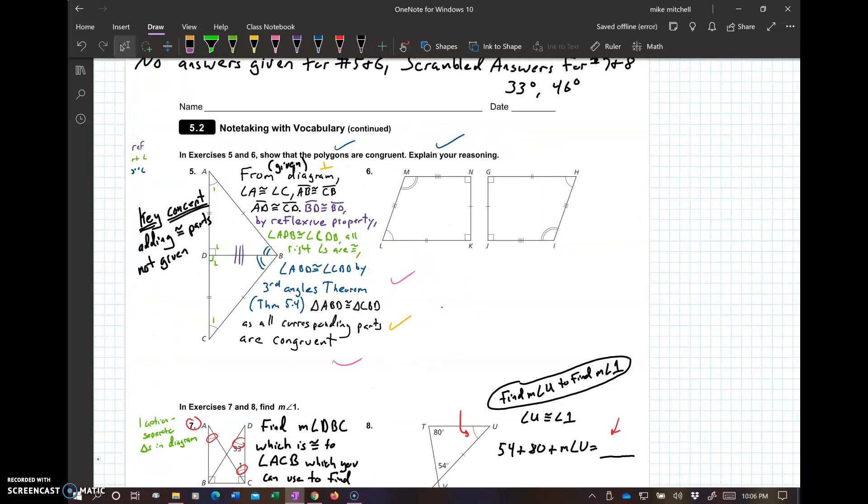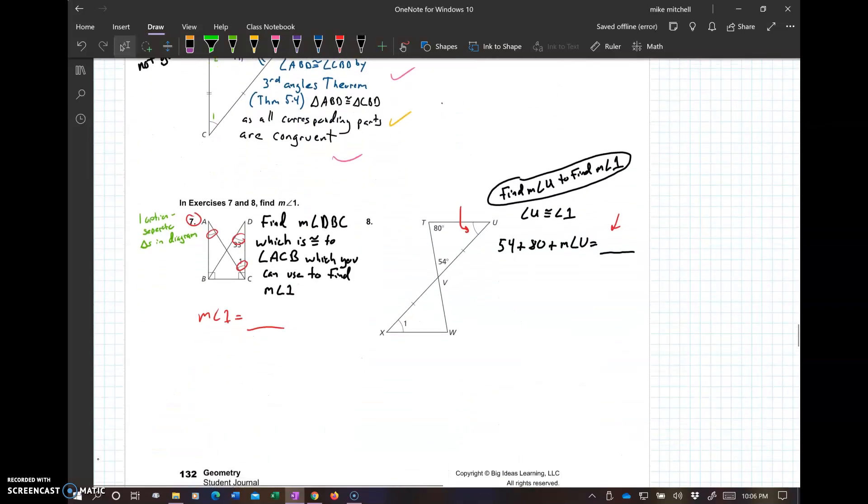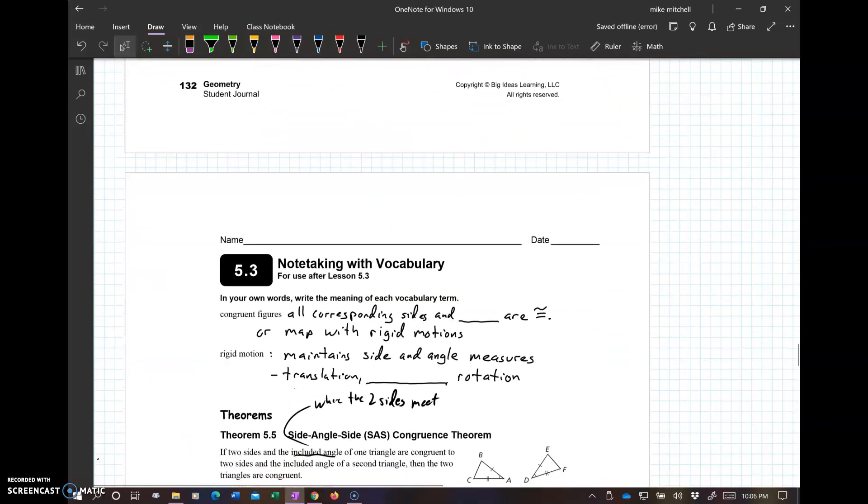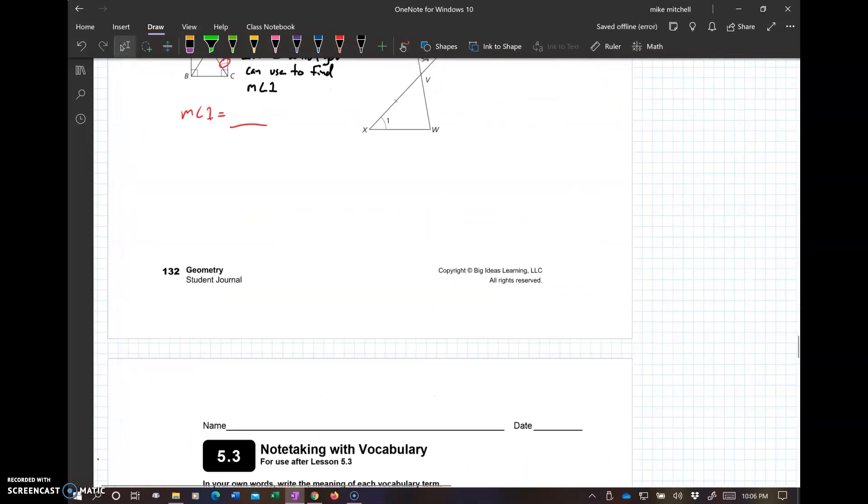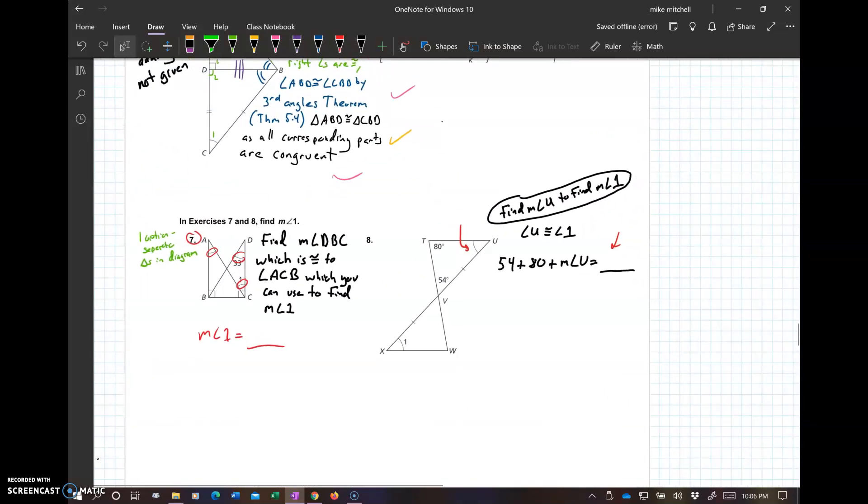We don't have any of the SSS, SAS, ASA, AAS at this point. The only way we've talked about at this point in the 5.2 is triangles are congruent if all their corresponding parts are congruent. That's why we're getting everything congruent. In the coming chapters, we will start working on easier ways to do that.